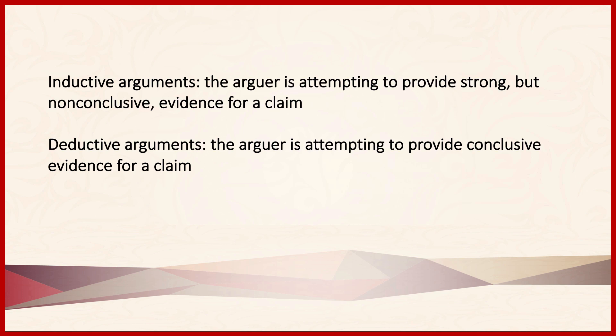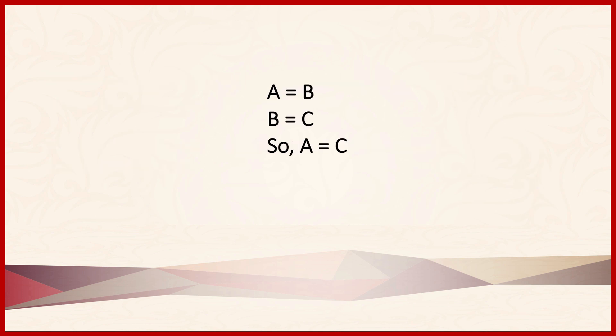Deductive logic is often called formal logic. This suggests, correctly, that the form of an argument is of paramount importance. The premises of a deductive argument are constructed in such a way that the arguer intends the conclusion to follow necessarily. If this sounds like mathematical reasoning, it's because they are related. Consider the following very basic argument form: A is equal to B; B is equal to C; so A is equal to C. It doesn't matter what A, B, and C represent — so long as those premises are true, the conclusion, A is equal to C, follows necessarily from them.